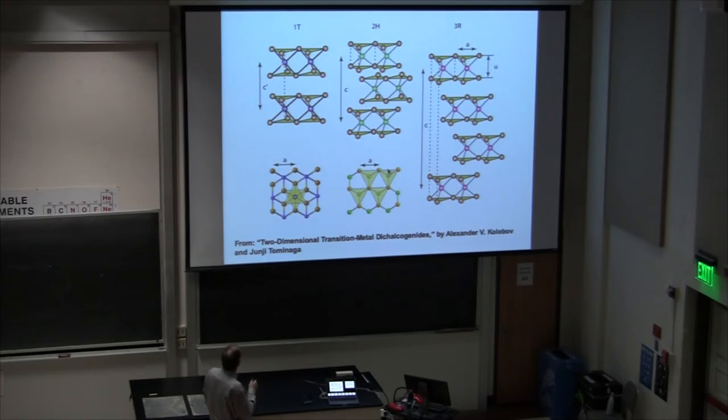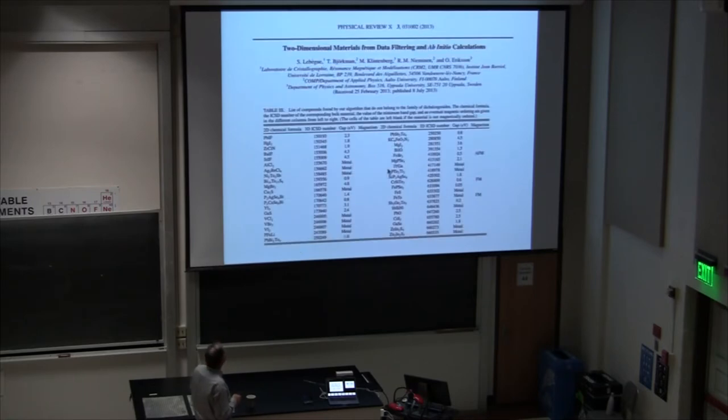There's some differences in coordination between these. These have the trigonal prismatic, and these have octahedral coordination. These are the three most common structure types. What's happened in the last few years is that a lot of the high-throughput computing community has gone through and they've calculated from first principles cleavage energies, and they've determined which materials are cleavable, essentially, with scotch tape. They're very weakly bonded between the layers. They can calculate that quite well from first principles.